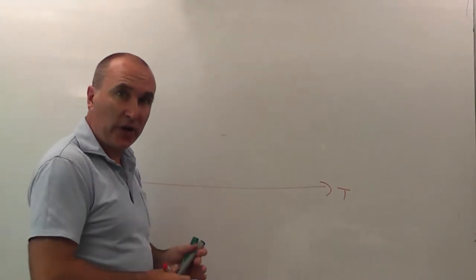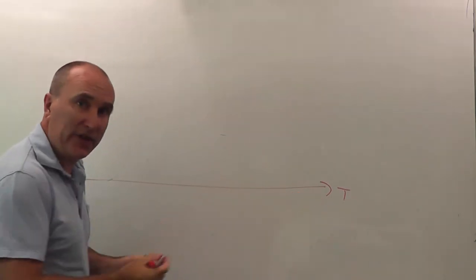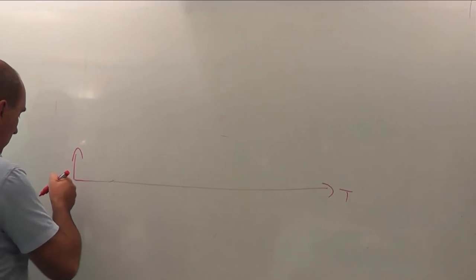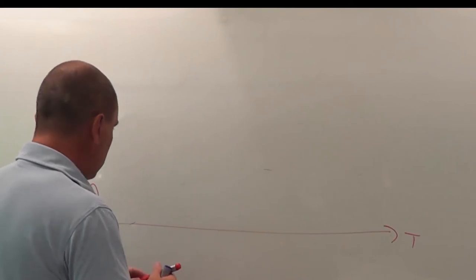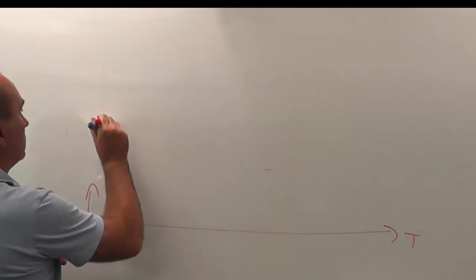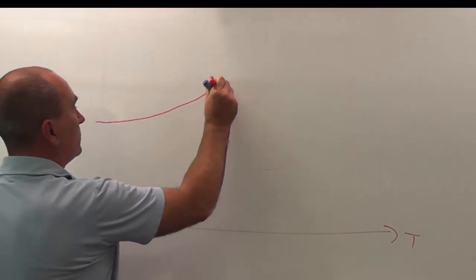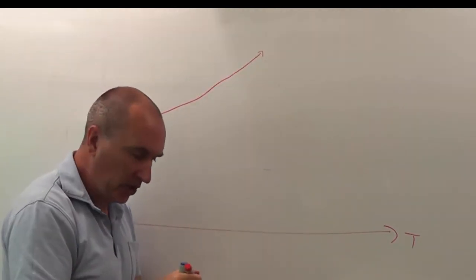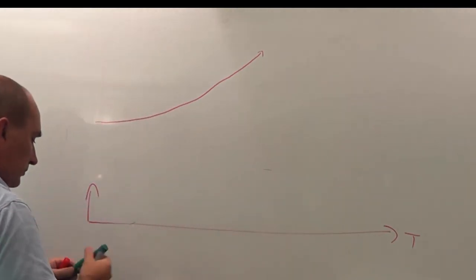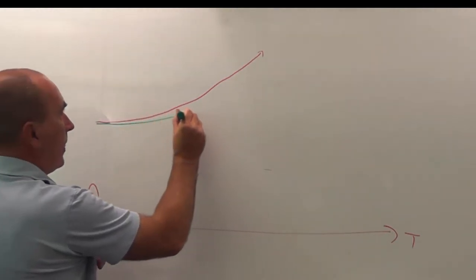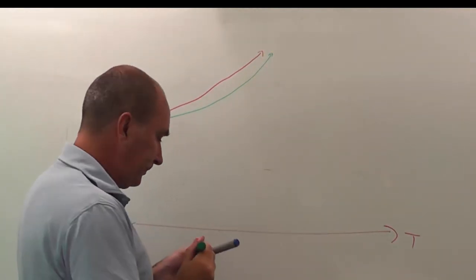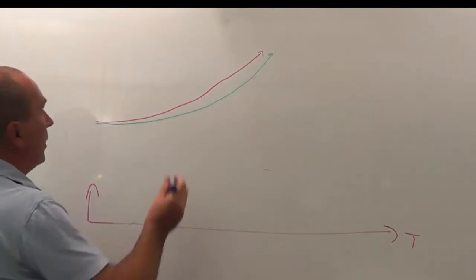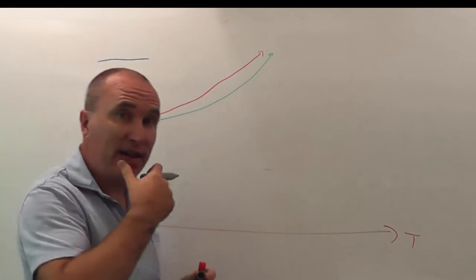So what we might see in shock in terms of trends is as time progresses, and this is the point of injury. We might see the heart rate climb to compensate for blood loss. We might see respiratory rate climb as a result of blood loss.